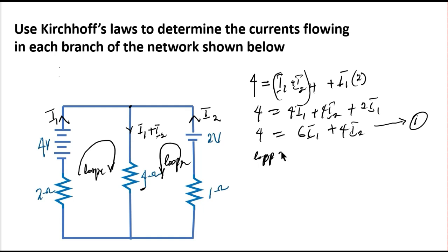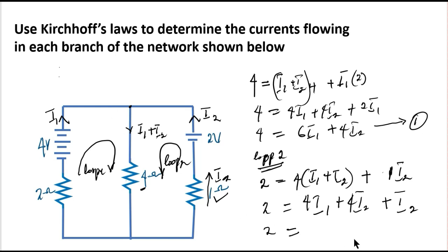Now in the second loop, we have a voltage source of 2 volts, supplying the same I1 and I2 in the resistor of 4 ohms, that's 4 times (I1 plus I2). Plus my 1 ohm resistor, that's 1 times I2. So 2 equals 4I1 plus 4I2 plus I2. That's 2 equals 4I1 plus 5I2. I'll call this equation 2.